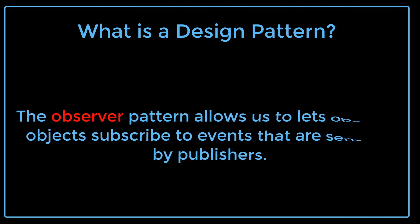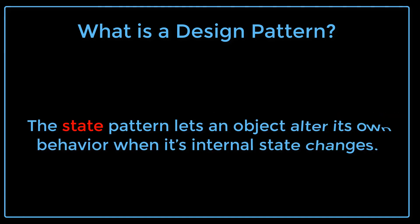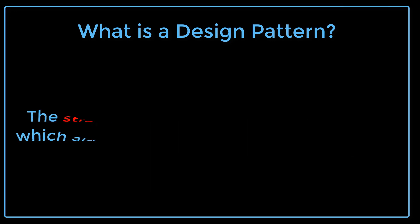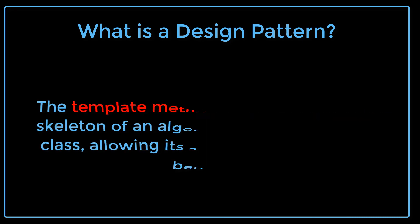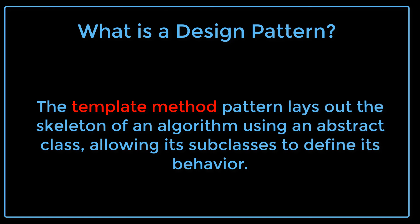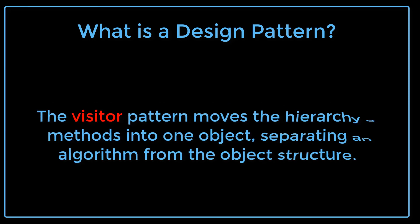The Observer pattern allows us to let observer objects subscribe to events that are sent out by publishers. The State pattern lets an object alter its own behavior when its internal state changes. The Strategy pattern lets the program select which algorithm to use from several choices at runtime. The Template Method pattern lays out the skeleton of an algorithm using an abstract class, allowing its subclasses to define its behavior. The Visitor pattern moves the hierarchy of methods into one object, separating an algorithm from object structure.